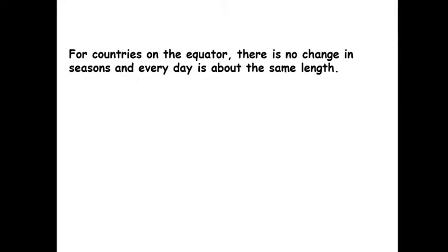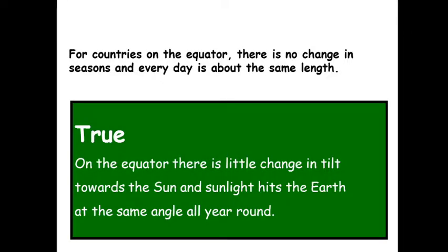Countries on the equator experience no change in seasons and every day is about the same length — true or false? This one is true because there is little change in the tilt towards the sun, so they get the same amount of time in sunlight and in darkness. Also, the sun's rays hit at the same angle all year round, giving very little seasonal change.